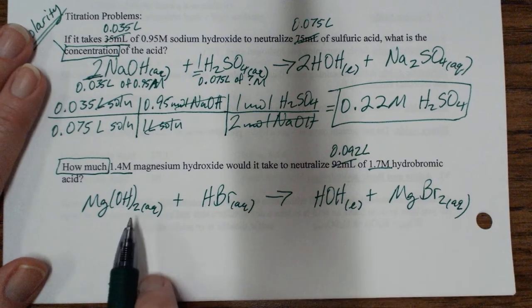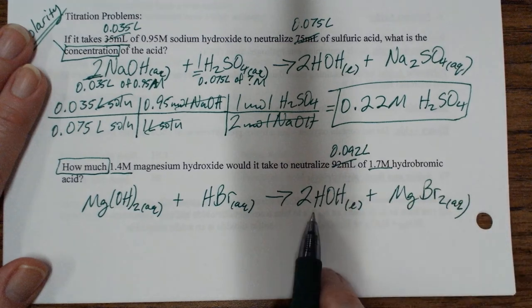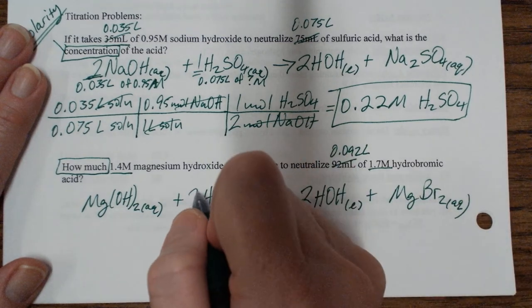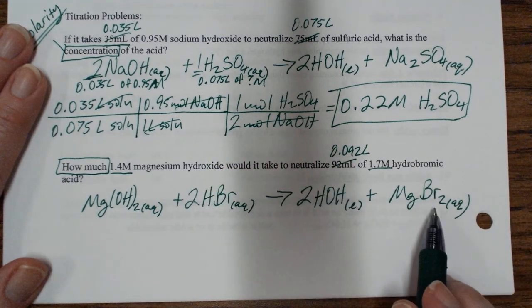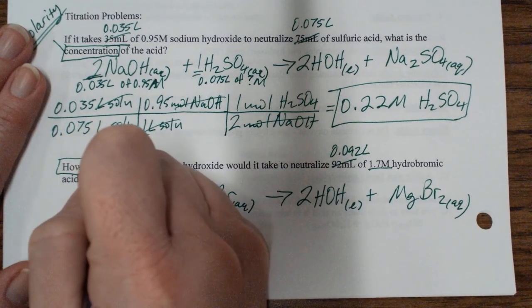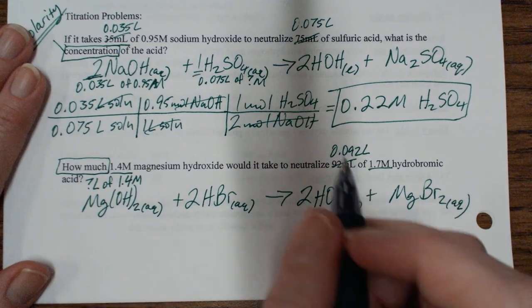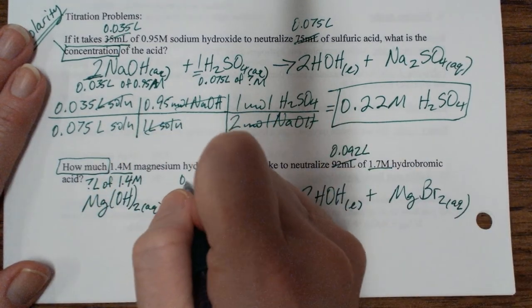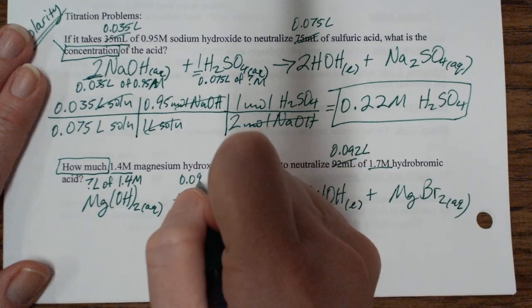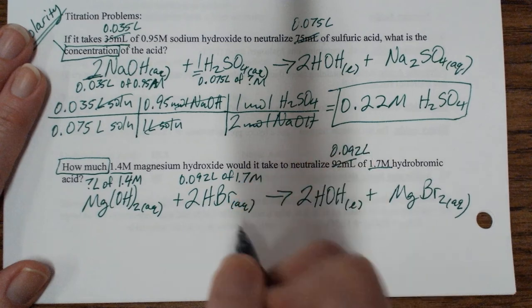Now we balance it. One magnesium, one magnesium. Two hydroxides, one hydroxide, so I put a 2 here. Two hydrogens, one hydrogen, so I put a 2 here. Two bromines, two bromines. Done. So I want to know how many liters of 1.4 molar magnesium hydroxide does it take to neutralize 0.092 liters of 1.7 molar hydrobromic acid.